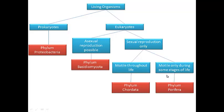Congratulations! We have now classified all four of our organisms to the phylum level. We can now use this flow map to help us create a dichotomous key.